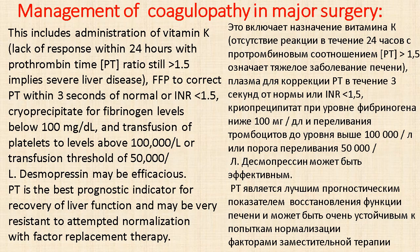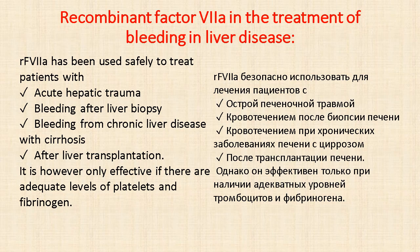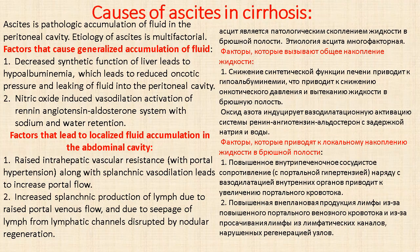Cryoprecipitate is used for fibrinogen levels below 100 mg/dL. Platelets are transfused for counts below 50,000. Desmopressin may be efficacious. PT is the best prognostic indicator for recovery of liver function and may be very resistant to normalization with factor replacement therapy. Recombinant factor has been used safely to treat patients with acute hepatic trauma, bleeding after liver biopsy, and bleeding from chronic liver disease with cirrhosis, but is only effective if there are adequate levels of platelets and fibrinogen.